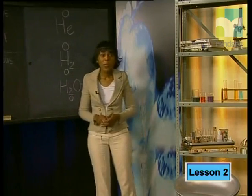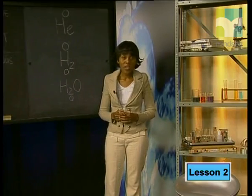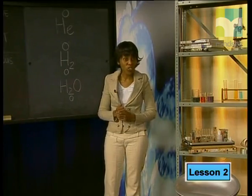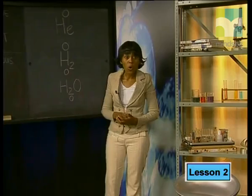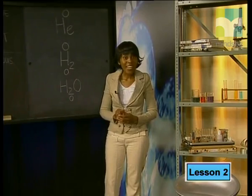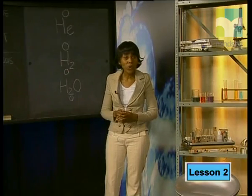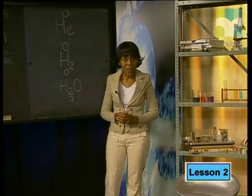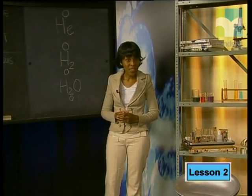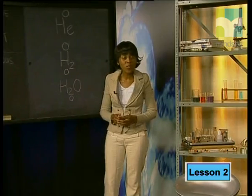Remember, elements become electron poor or rich when they bond with each other, so some elements in a compound must be electron rich and some must be electron poor. To comply with rule two, we must assign oxidation numbers to all the elements within a compound — if we do this correctly, the sum will be zero. Fortunately, we have another rule to help us. Rule three lists the known oxidation numbers for elements in certain groups of the periodic table.